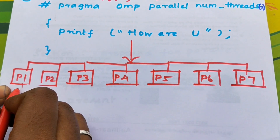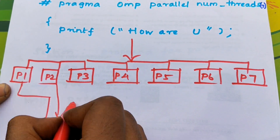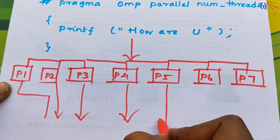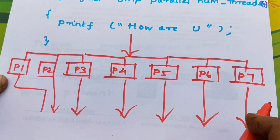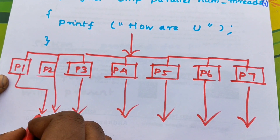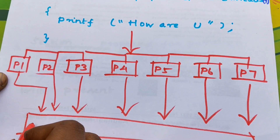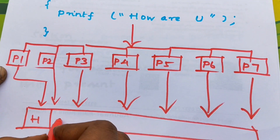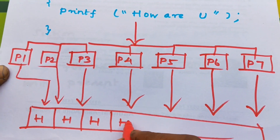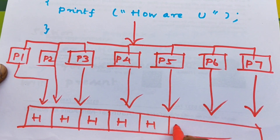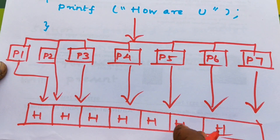In parallel execution, the final output from individual processors — one through seven — each prints 'how are you.' So the final output is 'how are you' printed seven times: one, two, three, four, five, six, and seven.